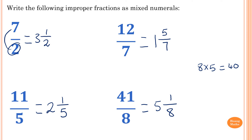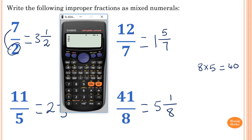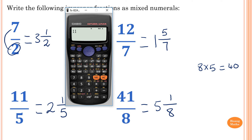You can also use a calculator to check. For 7 over 2, enter it and press shift SD — you get 3 and a half. For 11 over 5, divide 11 by 5 and press shift SD — 2 and 1 fifth. For 12 over 7, enter 12 divided by 7 and press shift SD — 1 and 5 sevenths. For 41 over 8, enter 41 divided by 8, press shift SD — 5 and 1 eighth. Thank you so much for watching.